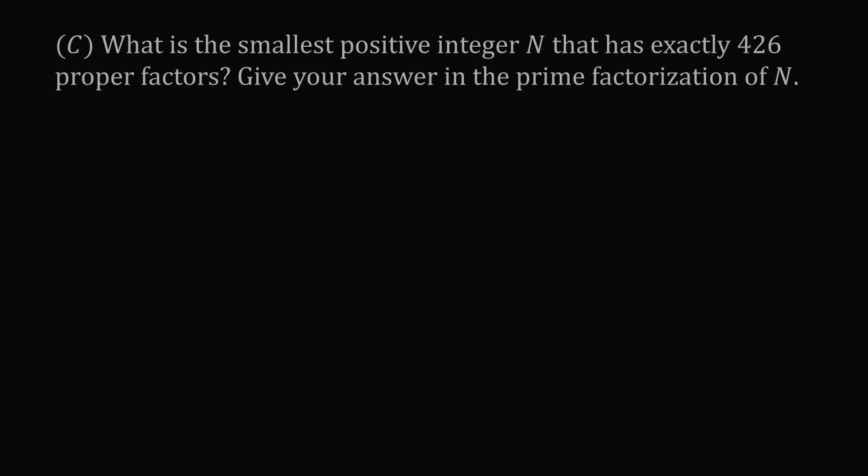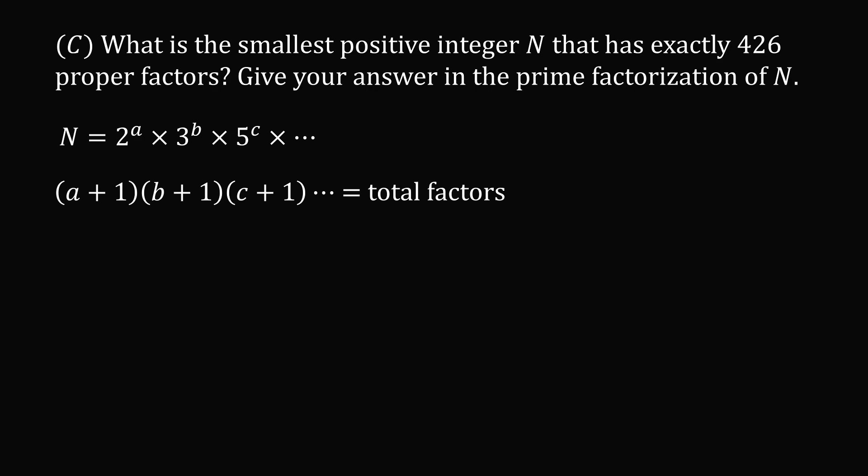Now let's go to Part C: What is the smallest positive integer n that has exactly 426 proper factors? Give your answer in the form of the prime factorization of n. Suppose n has a prime factorization equal to 2 to the a times 3 to the b times 5 to the c and so on. From our previous analysis, we know the total number of factors of n equals (a+1)(b+1)(c+1) and so on.